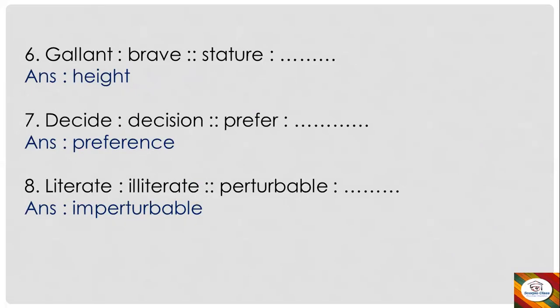Next: 'gallant' is to 'brave' as 'stature' is to dash. So the answer is 'height' — these are synonyms. 'Gallant' means 'brave'; 'stature' means 'height'. Next: 'decide' is to 'decision' as 'prefer' is to dash. 'Decide' is a verb and 'decision' is its noun form. Similarly, 'prefer' is the verb and its noun form will be 'preference'.